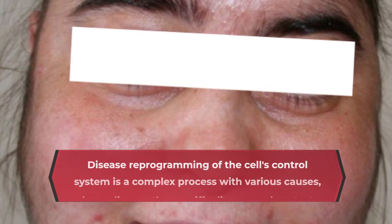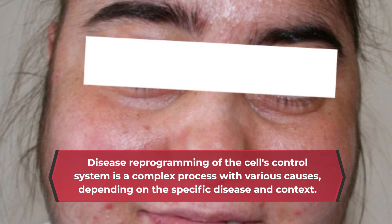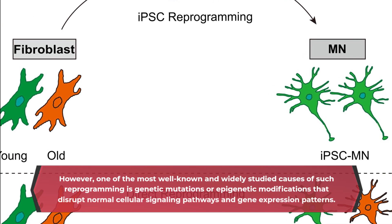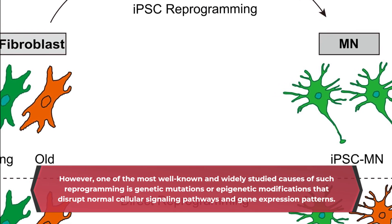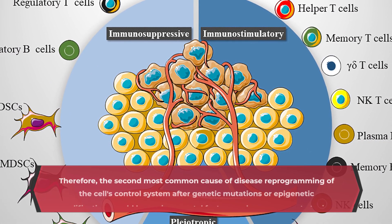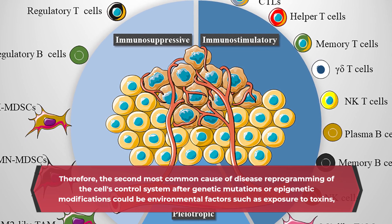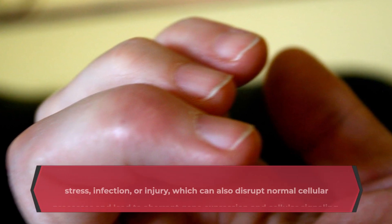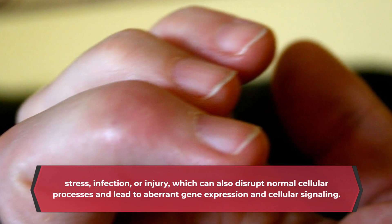Disease reprogramming of the cell's control system is a complex process with various causes, depending on the specific disease and context. The second most common cause of disease reprogramming after genetic mutations or epigenetic modifications could be environmental factors such as exposure to toxins, stress, infection, or injury, which can disrupt normal cellular processes and lead to aberrant gene expression and cellular signaling.